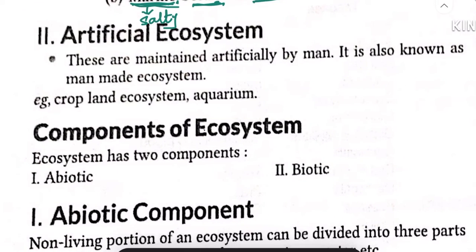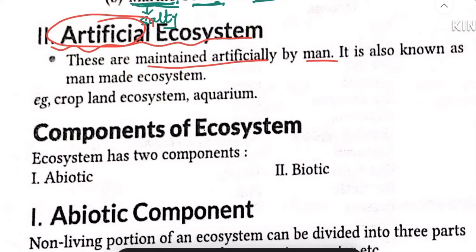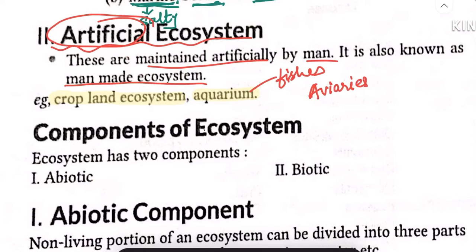Artificial ecosystems are those made and maintained by humans — also called man-made ecosystems. Important examples include cropland ecosystem, aquarium (for fish), serpentarium (for snakes), and aviaries (for birds). These are all examples of artificial ecosystems.